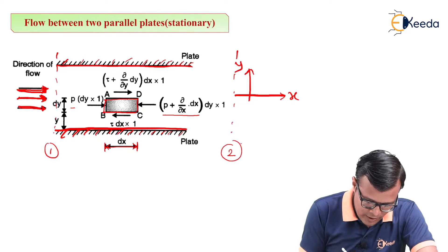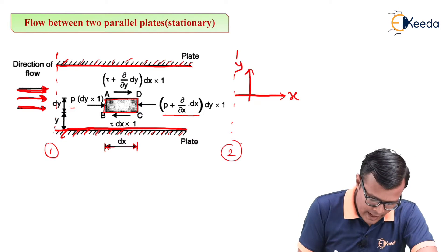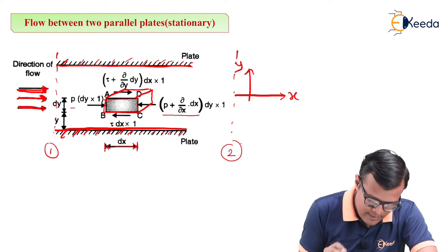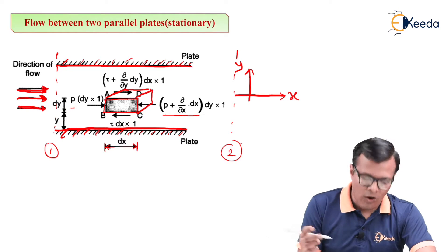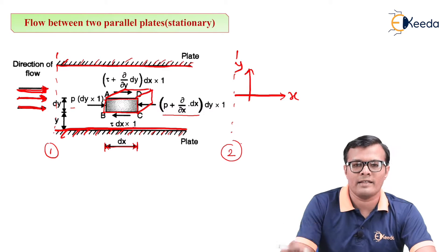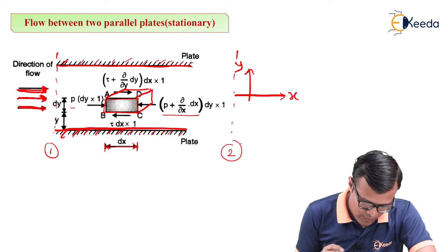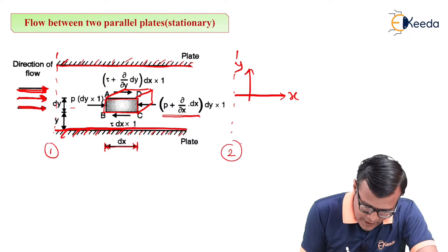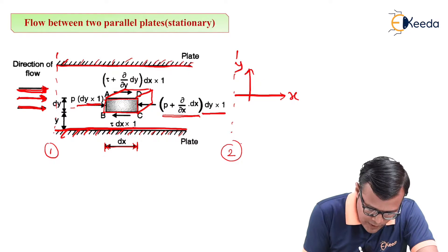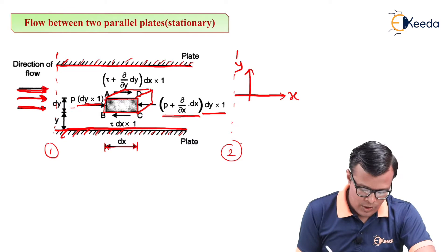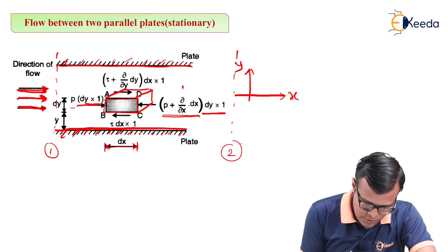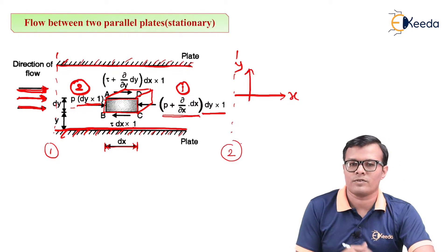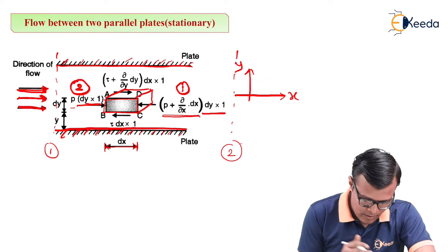If I want to draw this element in three dimensions, it will look like a box. Let the width of the box be 1, so the area becomes dy × 1. Pressure multiplied by area gives the value of force. There are two pressure forces: one in the positive direction and one in the opposite direction, generated due to pressure acting on the pipe element.